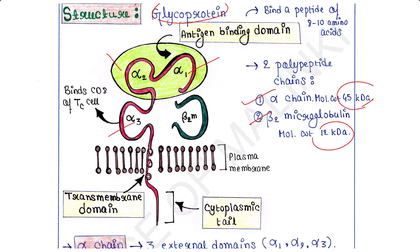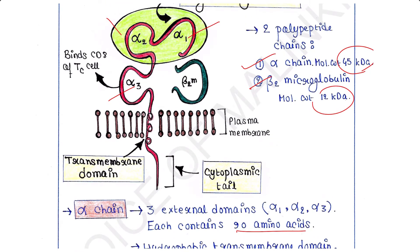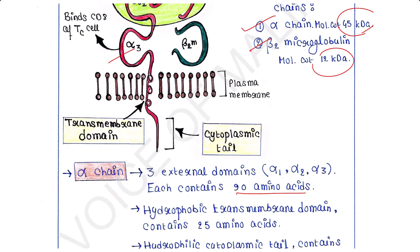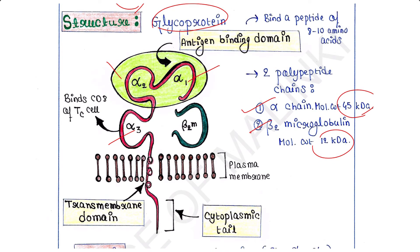The alpha chain contains a hydrophobic transmembrane domain that contains 25 amino acids. This part is the transmembrane domain. Via this transmembrane domain, the alpha chain is anchored with the plasma membrane of the cell.